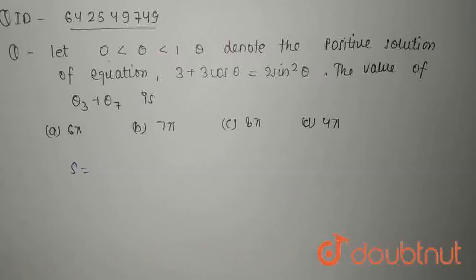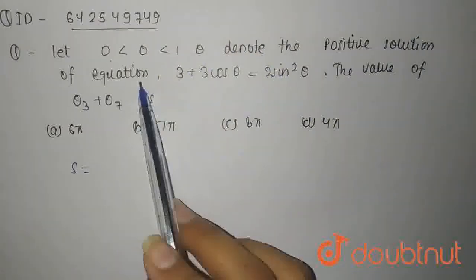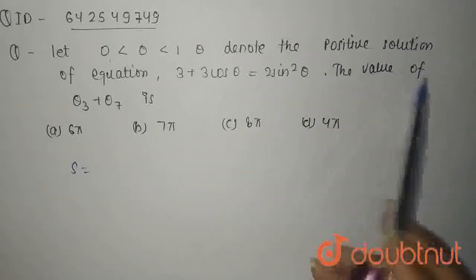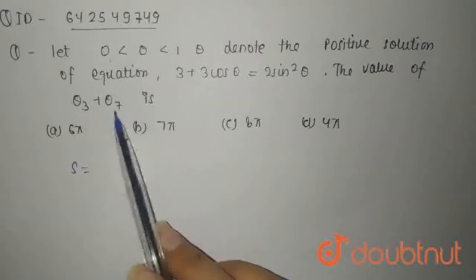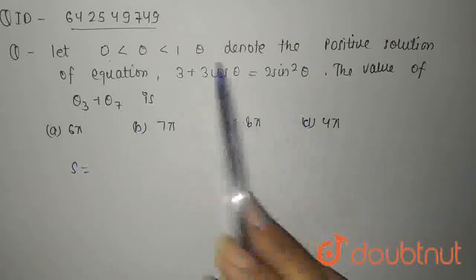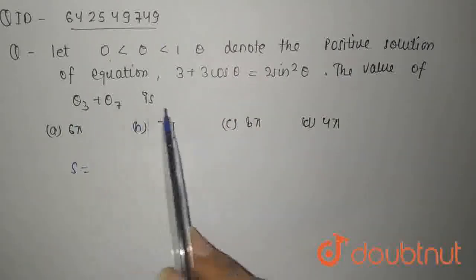Hello everyone, so the given question is: Let the value of theta denote the positive solution of equation 3 plus 3 cos theta equals 2 sin squared theta. The value of theta 3 plus theta 7 is 6 pi, 7 pi, 8 pi, or 4 pi. These are the given values. We have to find out the value of theta 3 plus theta 7.